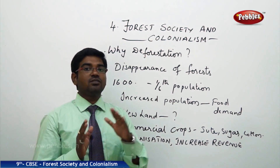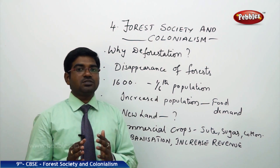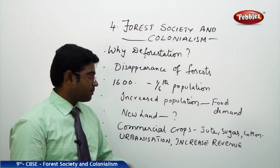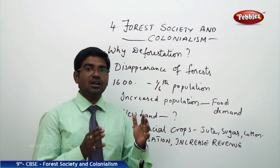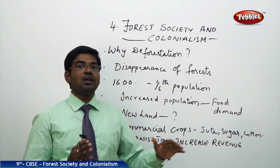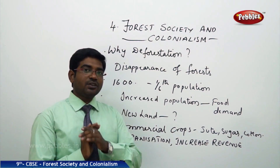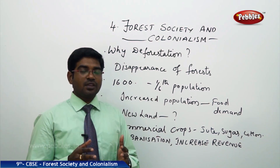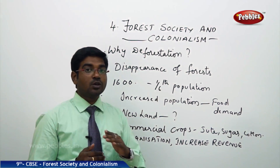The Britishers thought that clearing the forest would help people do commercial cropping — cultivation done for earning large amounts of profit. Major commercial crops are jute, sugar, cotton, wheat, etc. The Britishers also thought that forests were waste and not useful. If forests were cleared and brought under agricultural use, they could collect tax from the land, automatically generating revenue. So they started giving permissions for people to cut the forest and encouraged the clearing of forests.